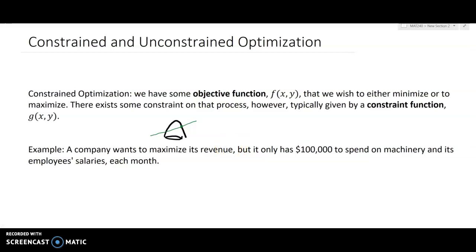However, it's impossible to produce infinitely many units. So we can think about this $100,000 as our constraint. Our budget is $100,000, so we could think about this as the constraint or related to the constraint function.